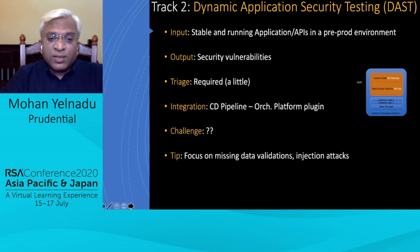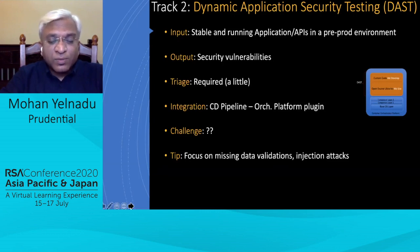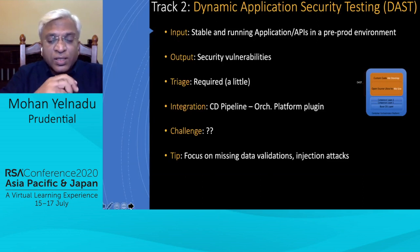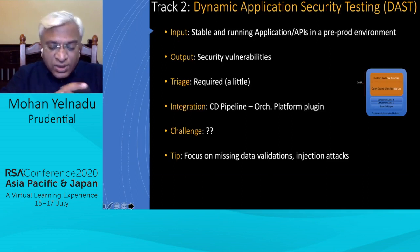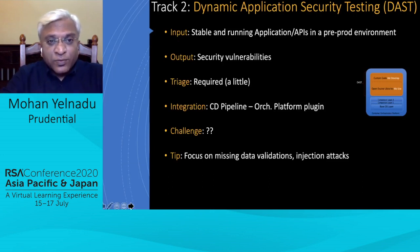The tip for DAST: focus on missing data validation and injection attacks. These are very easily detectable by automated tools like BurpSuite or ZAP. Increase the payloads you provide as input, ensure the tool can identify those vulnerabilities, and prioritize them for remediation.